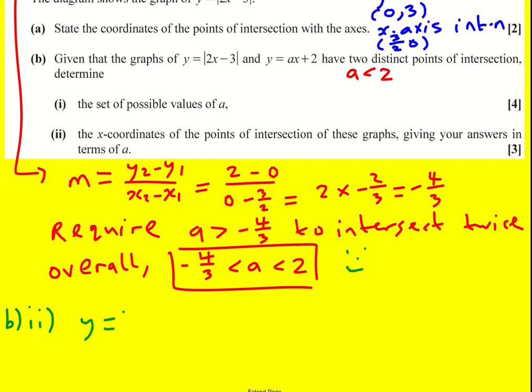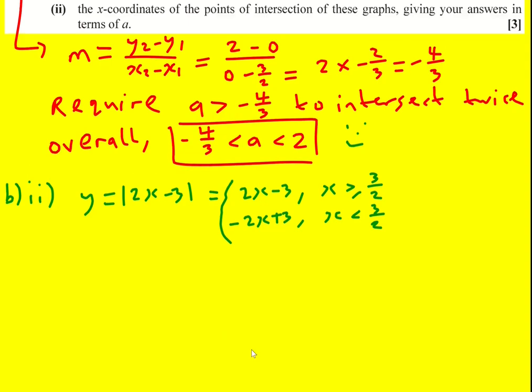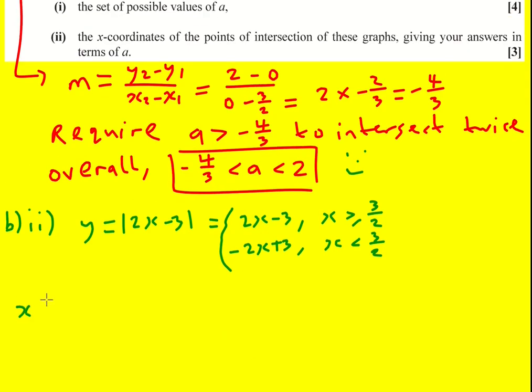So y equals the modulus of 2x minus 3 is going to equal 2x minus 3 when x is greater than or equal to 3 over 2, and then minus 2x plus 3 when x is less than 3 over 2, because when it's less than 3 over 2 the thing inside is negative, so we put a negative in front to make it positive. That's the standard stuff on modulus.